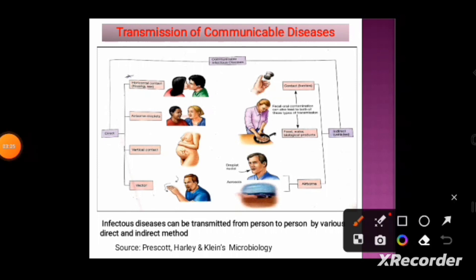Direct methods include horizontal contact, such as through kissing or sex — examples are HIV and syphilis. Through airborne droplets when persons are in close contact, the sick person generates droplets containing pathogenic microorganisms — examples include COVID-19 and flu. Vertical transmission refers to infections transmitted from mother to embryo, fetus, or baby during pregnancy or childbirth — examples include syphilis, rubella, HIV, and toxoplasmosis.